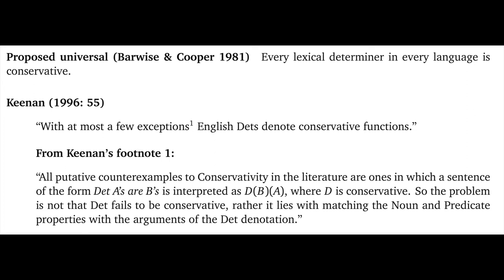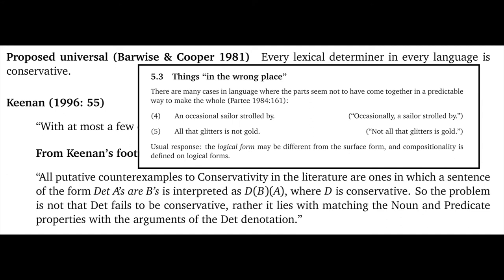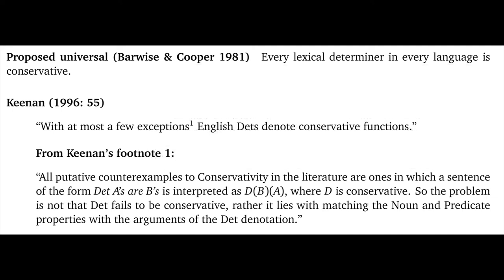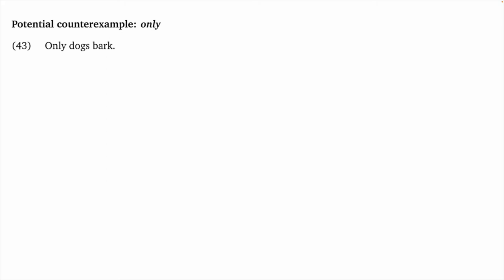In another foundational paper, Barwise and Cooper proposed this as a universal: every lexical determiner in every language is conservative. Keenan is a tad more circumspect, saying 'with at most few exceptions, English determiners denote conservative functions,' with a footnote alluding to a difference between surface forms and logical forms — connectable to our discussions of compositionality. Let me skip to the potential counterexample only, to give you a sense of what it might be like to encounter a non-conservative determiner.